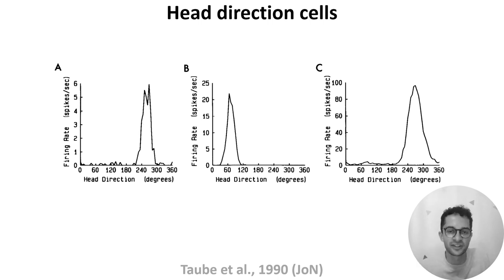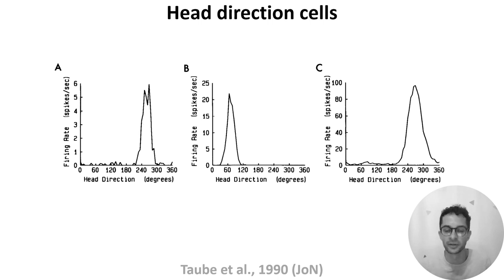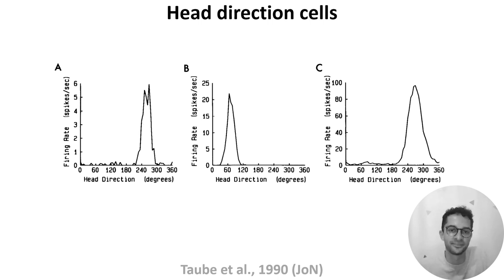Around 30 years ago, researchers were recording the activity of individual neurons in the rat brain when they discovered cells which seem to encode the heading direction of the animal — and so they named these head direction cells. Here, for example, are three neurons' firing rates in spikes per second as a function of the animal's heading direction, and you can see that each neuron is very specific.